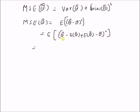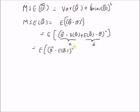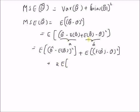Clearly, this can be seen as a plus b whole square, where a is equal to the difference between theta hat and expectation of theta hat, and b is the difference between expectation of theta hat and theta. So this a plus b whole square can be written as a squared plus b squared plus 2ab. That is, we have expectation of theta hat minus expectation of theta hat whole square, plus expectation of theta hat minus theta whole square, and the third term, the 2ab term, is two times expectation of the product of these two terms.